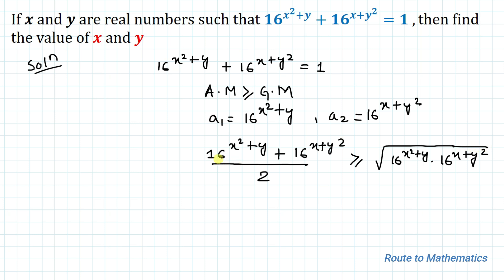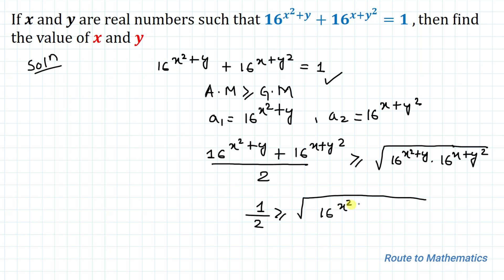In the numerator we have 16^(x²+y) + 16^(x+y²), which equals 1. So we have 1/2 greater than or equal to the square root of the product. We can see that we have the same base, which is 16, so the powers can be added. We can write 16 to the power x² + y + x + y².